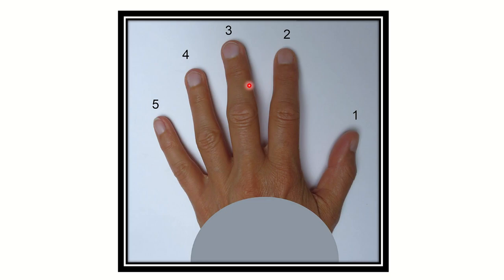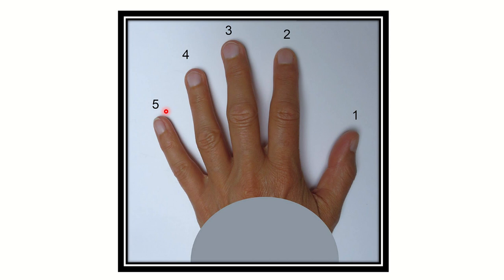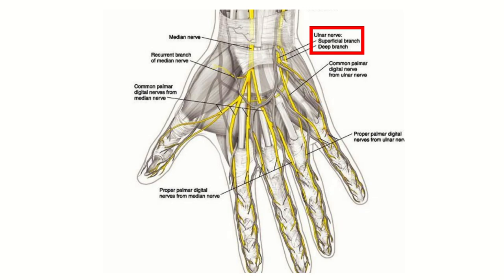First, let's identify the finger. In medical science, finger counting starts from the thumb. So the thumb is the first, index is the second, middle is the third, ring is the fourth, and the little finger is the fifth. So we have to find out the interossei muscle attached to the fourth finger, which is the ring finger.